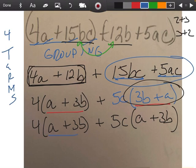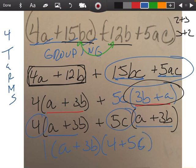Okay, so now at this point, we can say, look, this is my common factor. So let's take that out, a plus 3b, and then the other factors are going to be 4 plus 5c.